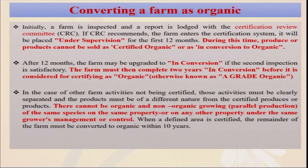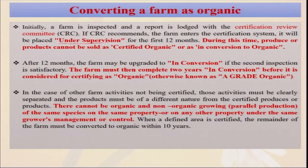During the conversion period there are certain rules and regulations. When a farmer or entrepreneur wants to make their farm organic, from the date of application they must follow regulations, and there is a defined conversion period before they receive certification. Under supervision, the farm is first inspected and a report is lodged with the Certification Review Committee (CRC). If the CRC recommends, the farm enters the certification system and is placed under supervision for the first 12 months.